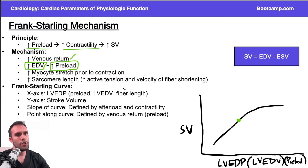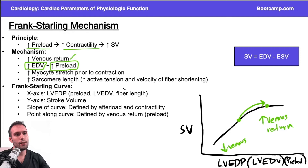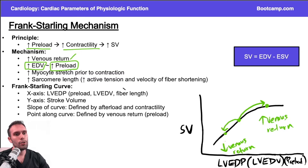At any point along this curve, if we have higher venous return — perhaps due to venoconstriction — the point moves to the right, indicating increased stroke volume. If there's a decrease in venous return, such as giving a patient nitrates, in hypovolemia, or with a low central venous pressure, the point moves to the left. A lower venous return means lower preload, lower fiber length, and therefore less stroke volume.